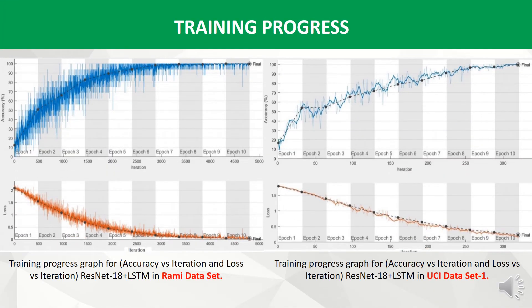Here we can see the training progress graph of ResNet-18 plus LSTM on two datasets. It shows the training and validation accuracy and loss with respect to iteration. From this graph we can see that no overfitting has occurred.